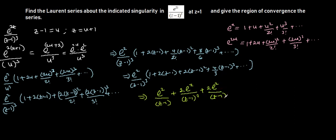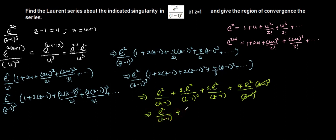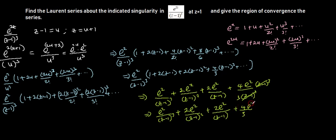Continuing the expansion, we get plus 2 exponential 2 divided by (z minus 1), then plus 4 exponential 2 over 3, continuing to infinity. So the final Laurent series is: e² / (z−1)³ plus 2e² / (z−1)² plus 2e² / (z−1) plus 4e²/3, and so on to infinity.